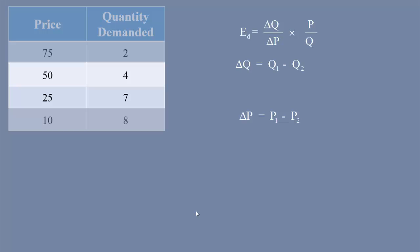In our example, the initial quantity is 4, new quantity is 7. The change in quantity is 4 minus 7 equal to minus 3 units.